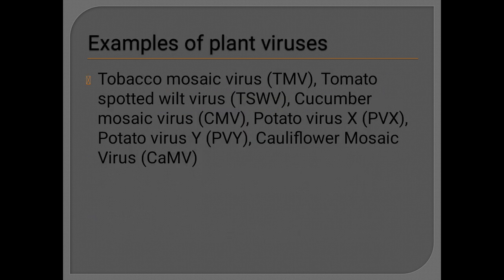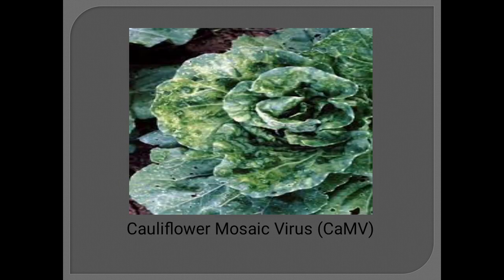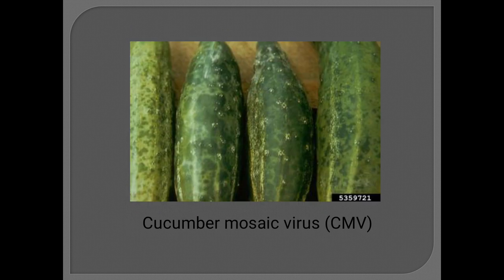Examples of plant viruses are tobacco mosaic virus, tomato spotted wilt virus, cucumber mosaic virus, potato virus X, potato virus Y, and cauliflower mosaic virus. Here you can see the tobacco mosaic virus and how it infects tobacco leaves, the cauliflower mosaic virus, and the cucumber mosaic virus.